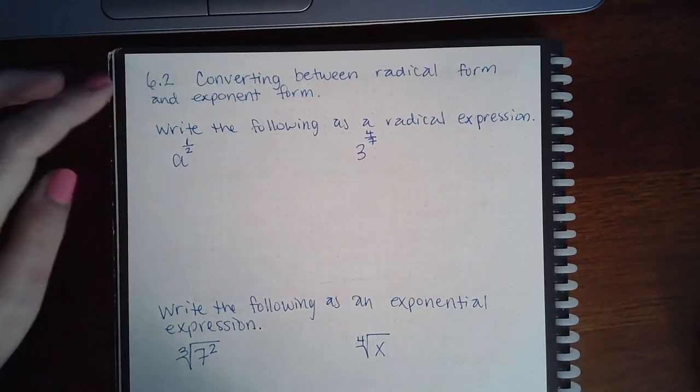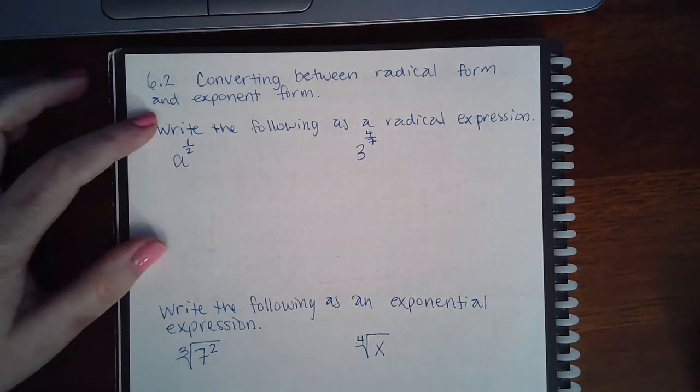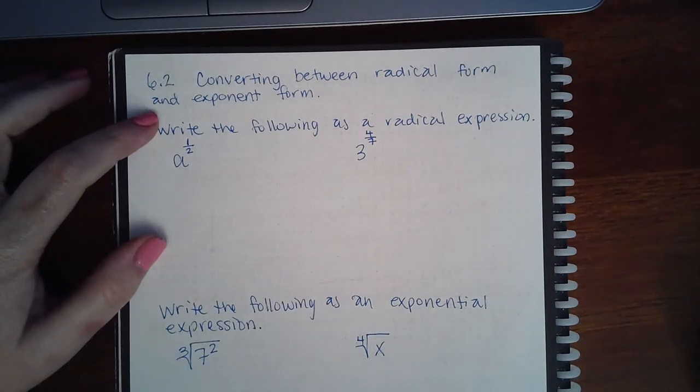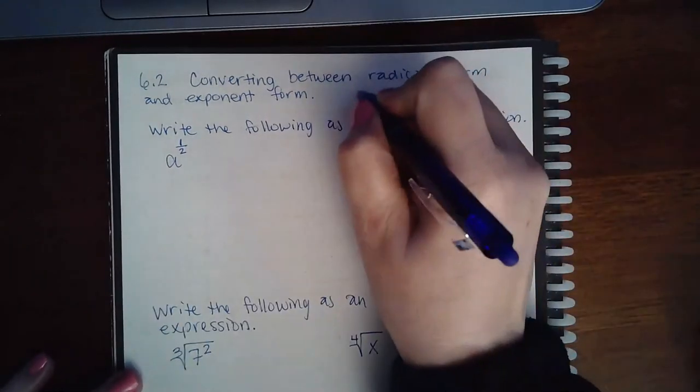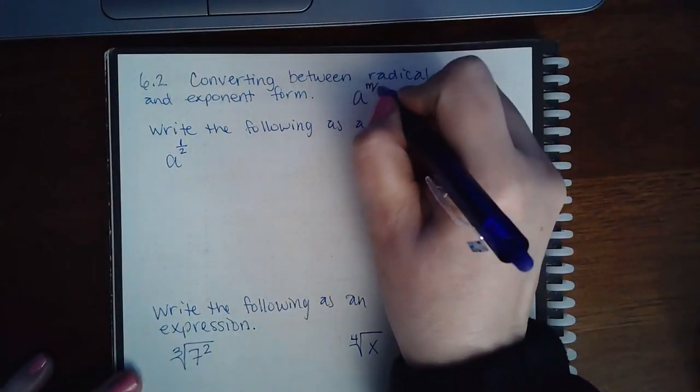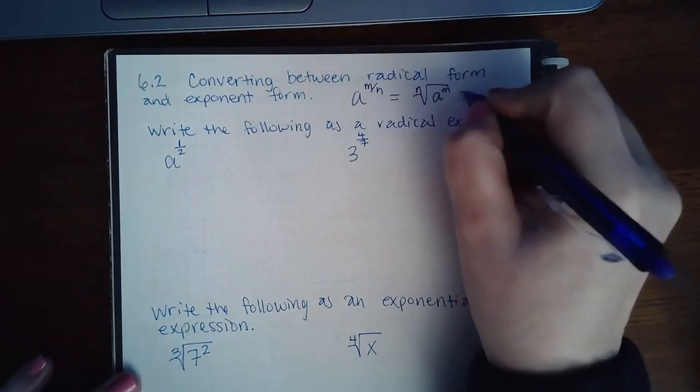Okay, here we are with 6.2 converting between radical form and exponent form. In these problems we're going to use that rule that says if you have this, it's the same thing as this, or the same thing as this.